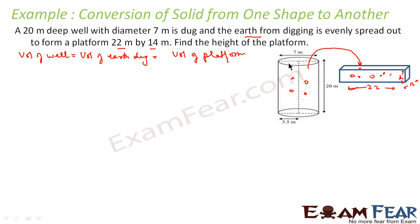So this is a well that is dug; some earth came out, and the same soil is used to create a platform 22 meters by 14 meters, and it rose to a particular height. We have to find the height of the platform. The volume of the well equals the volume of the platform, because volume of the well equals volume of earth dug out, and volume of earth dug out equals volume of platform.